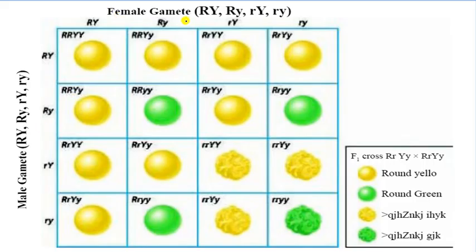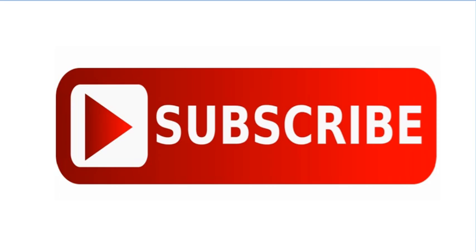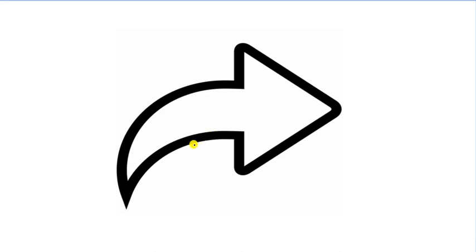The female gametes are capital R capital Y, capital R small y, small r capital Y, and small r small y. And here is capital R small y and small r small y. You can write all these types of questions and keep coming. Thank you. Have a nice day.